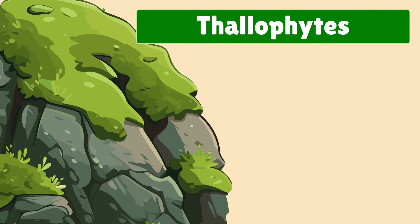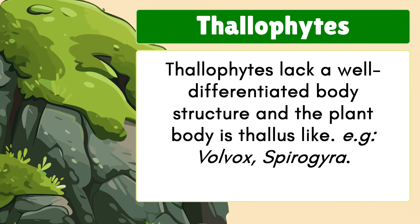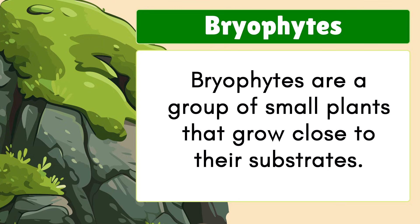First are Thallophytes. They do not have a well-differentiated body; instead their body is thallus-like. They include organisms like Volvox, Spirogyra, Ulothrix, etc.